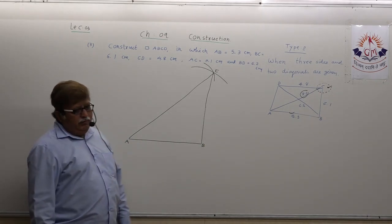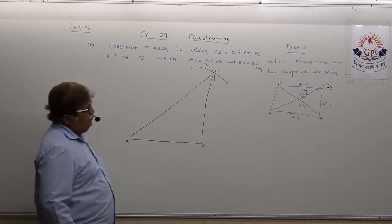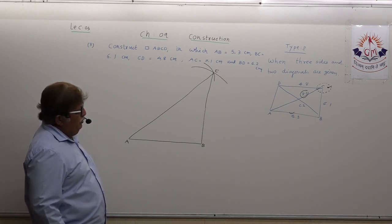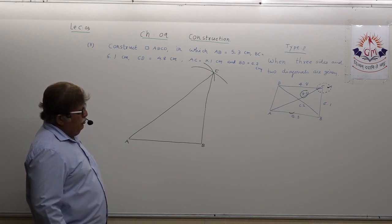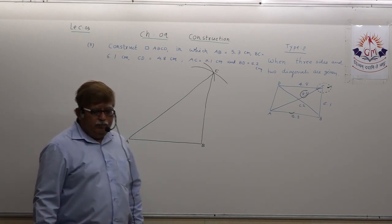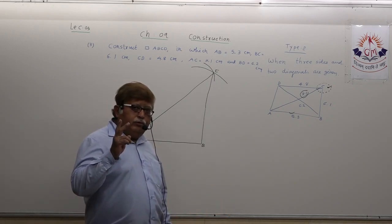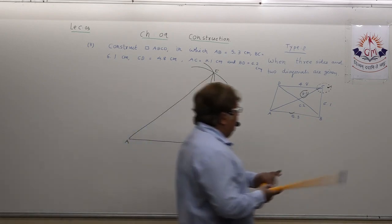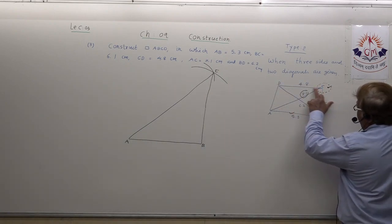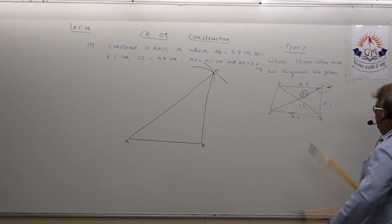First, accomplish at least up to this point. Then you have to start thinking of how to obtain point D. For that purpose, you have to concentrate on those two line segments where D is common — that means you will concentrate on CD and BD, not on AD because we don't have AD.